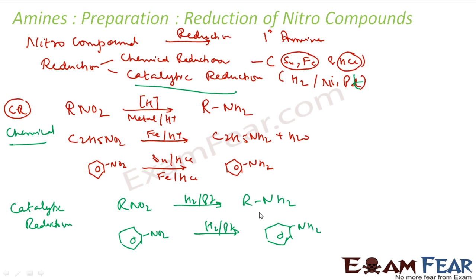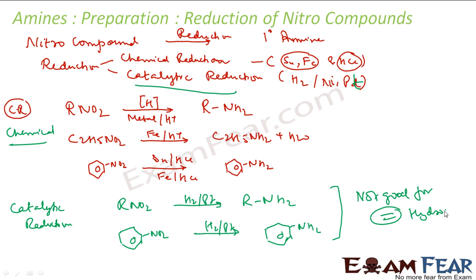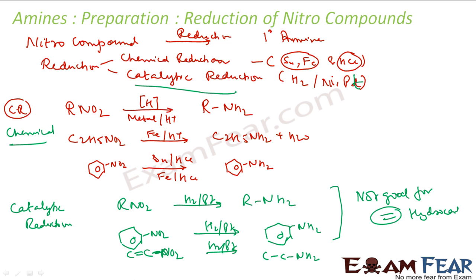This catalytic method is not good for hydrocarbons with a double bond. Why? Because it will actually make the double bond into a single bond. So if I do a catalytic reduction on a compound with a double bond, that double bond will be removed. So this method is not good for double bond compounds.